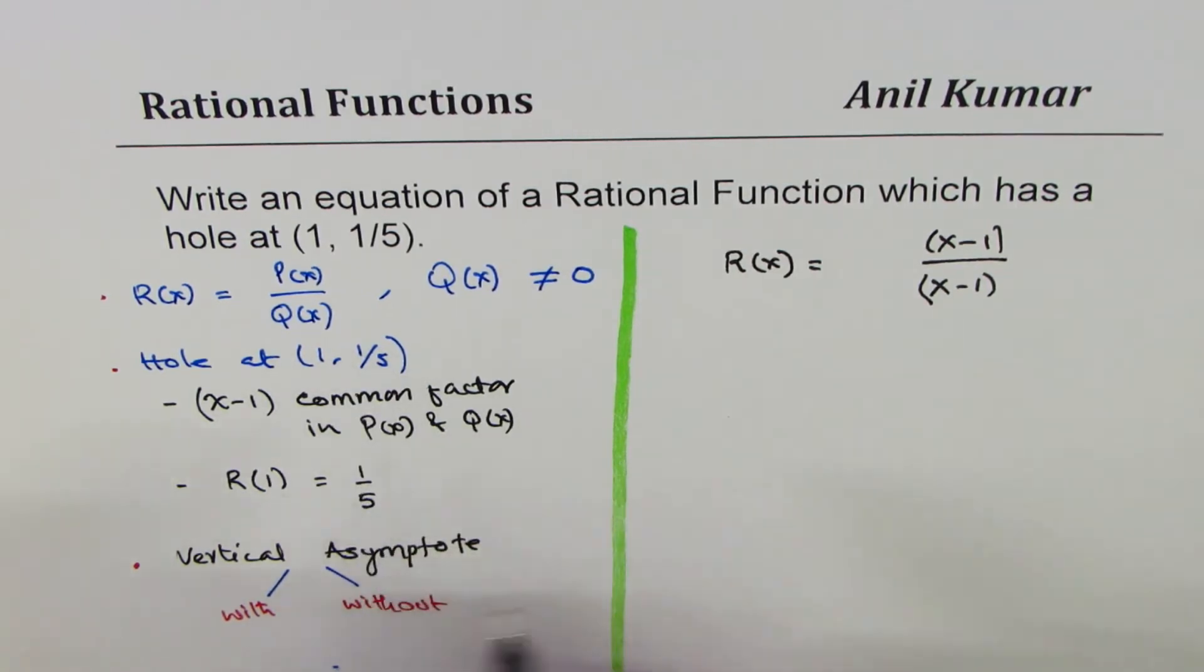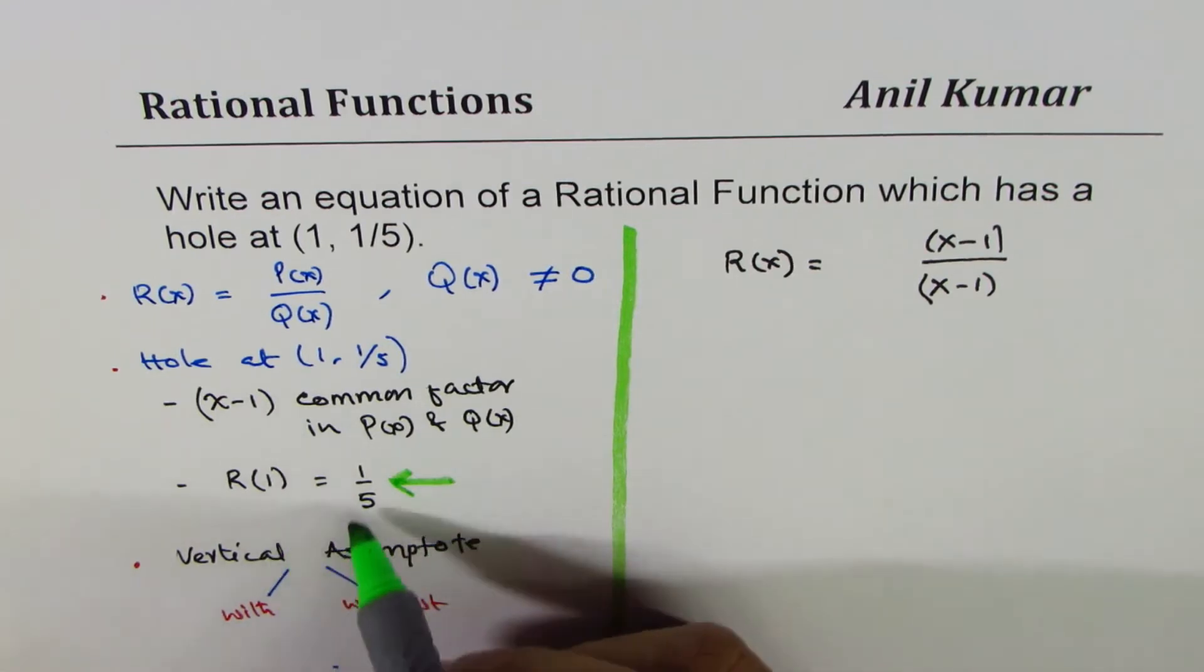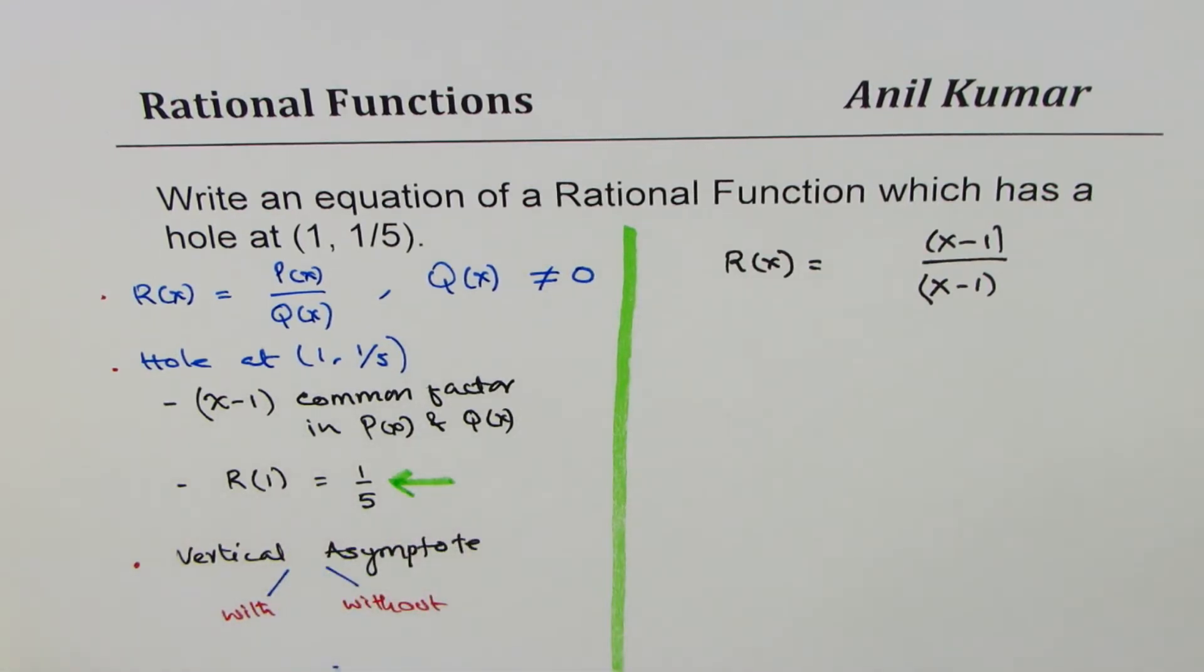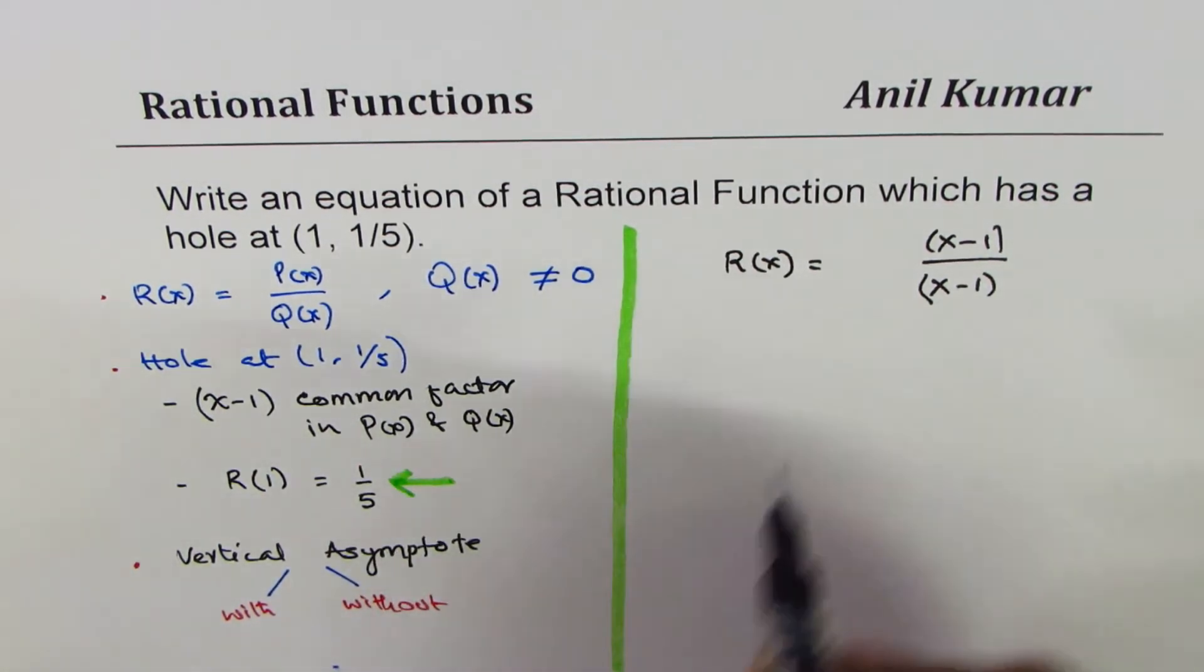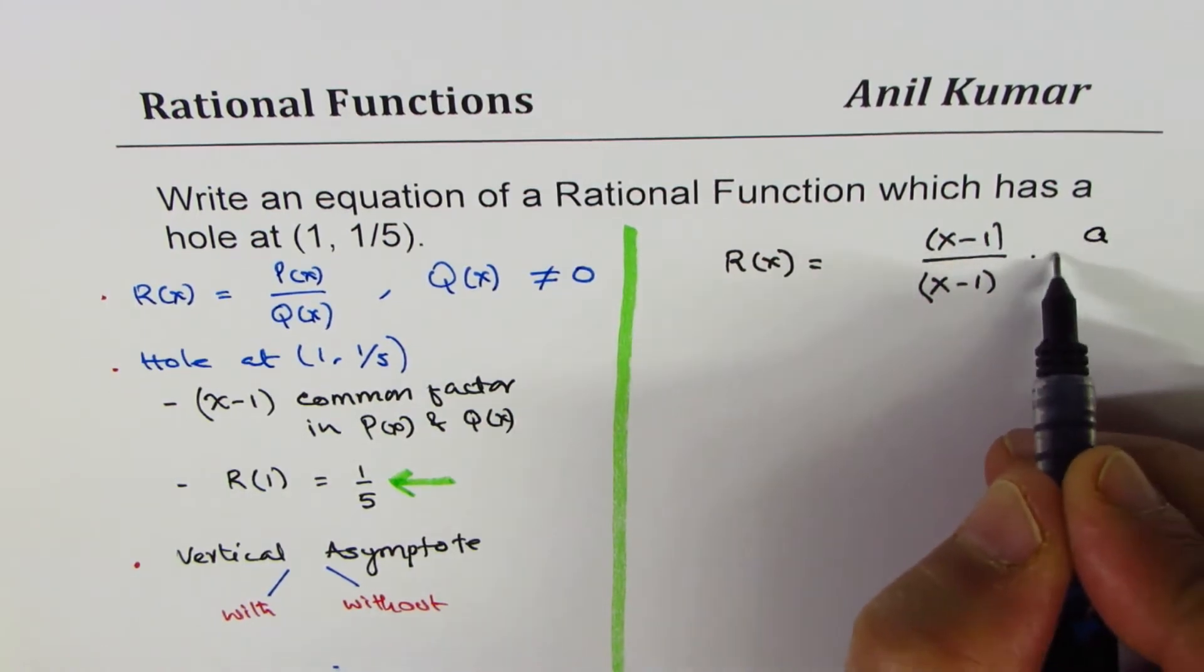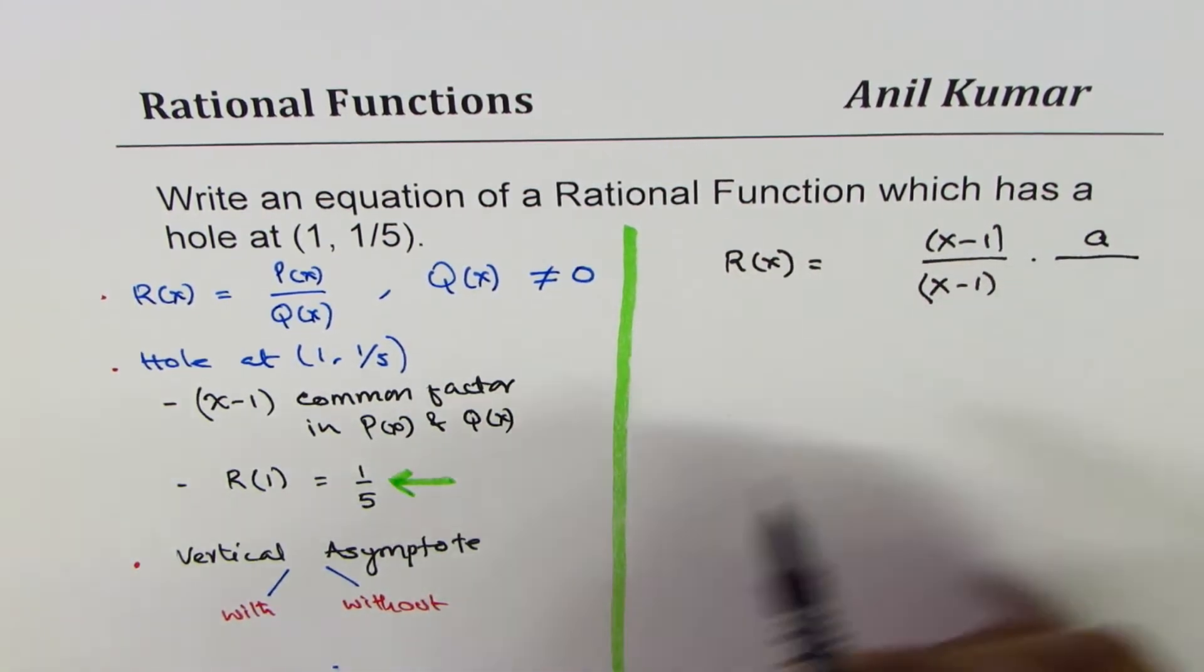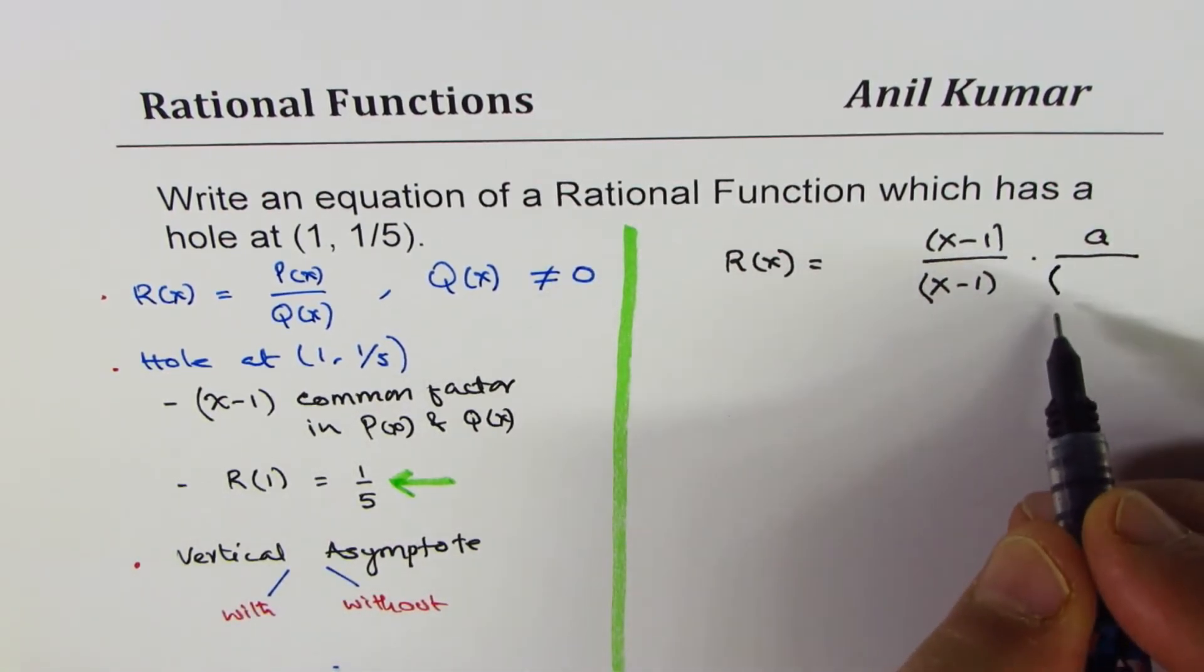So we also need to satisfy the condition R(1) should be 1/5. How do we satisfy this condition? At x=1, we need 5 in the denominator. So what I will do here is I'll multiply this by 'a' over—in the denominator I want 5 when x is 1.